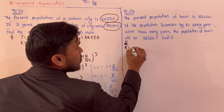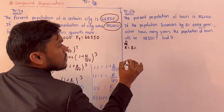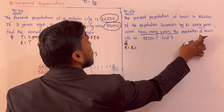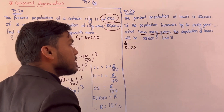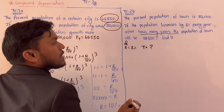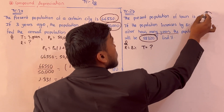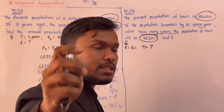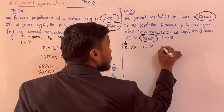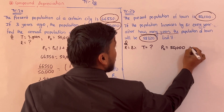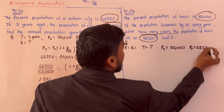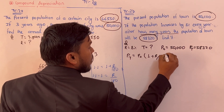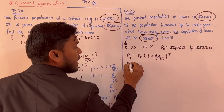Next example: in how many years will the population of a town double? We need to find t. Using Pt equals P0 times (1 plus r upon 100) to the power t. With P0 equals 50,000 and Pt equals 58,320.